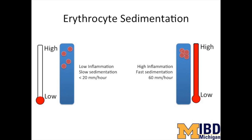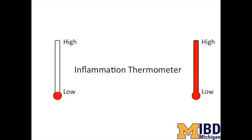This rate of sedimentation is measured in millimeters per hour. For patients with IBD, the ESR — also called the sedimentation rate or sed rate — is a bit like a thermometer for inflammation. When the sed rate is high, inflammation is active. And when the sed rate is low, inflammation is well controlled.